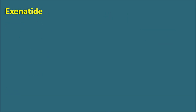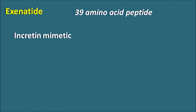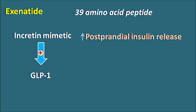The next one is exenatide. Exenatide is a 39 amino acid peptide that is somewhat modified. It acts as an incretin mimetic, binding to glucagon-like peptide GLP-1 receptors, thereby increasing insulin release. Exenatide increases postprandial insulin secretion and controls glucose levels after a meal. Since it has 39 amino acids, it is not suitable by oral route and is given by subcutaneous route.